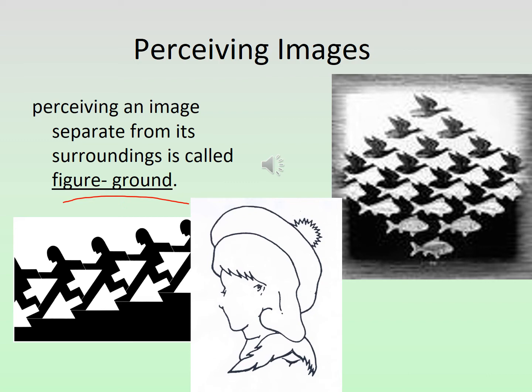In order to interpret or perceive an image, it has to stand out from its background. This is known as figure-ground. For example, if I painted a person the same color as my back wall, you wouldn't be detected because you're not different from the background. So if you're looking at the black images on the right picture, you're perceiving birds, but if you focus on the white background, then you would be perceiving fish. That's figure-ground.